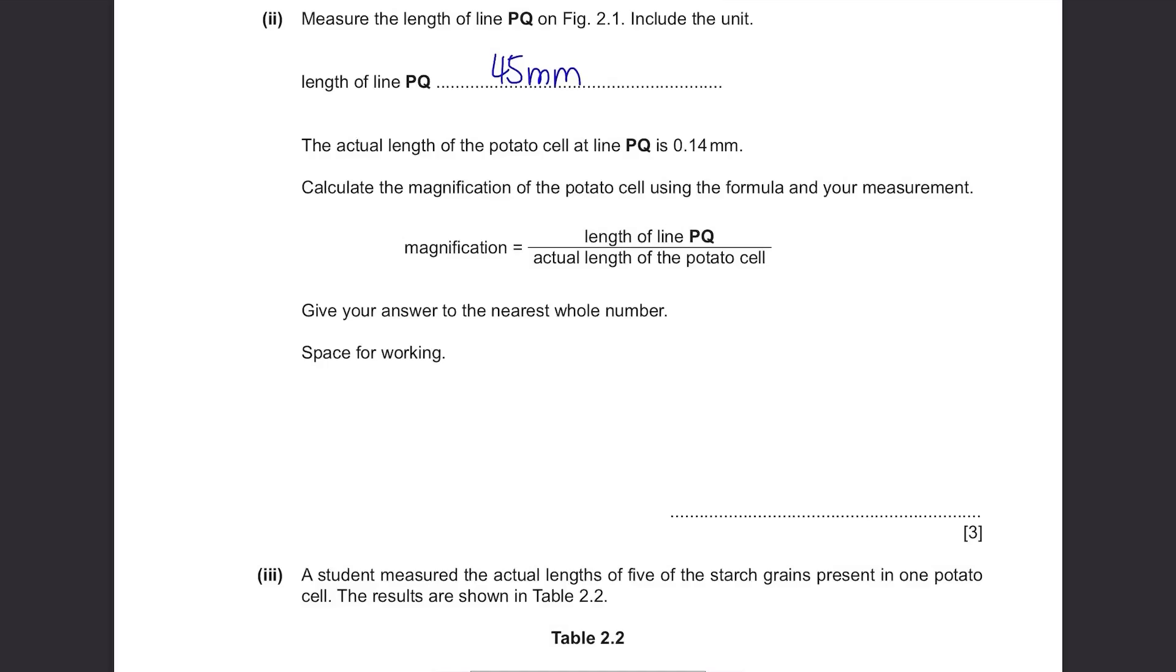Part C(iii): The actual length of the potato cell at line PQ is 0.14mm. Calculate the magnification of the potato cell using the formula and your measurement. Magnification equals to length of line PQ over actual length of the potato cell. Give your answer to the nearest whole number. Just substitute the values. 45 divided by 0.14. 321 rounded to whole number.